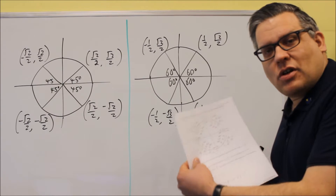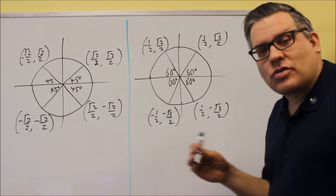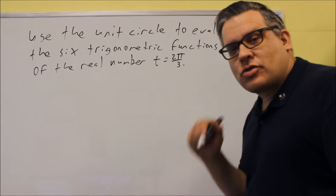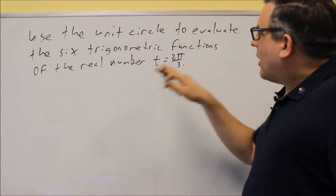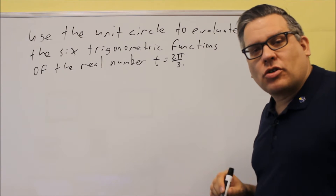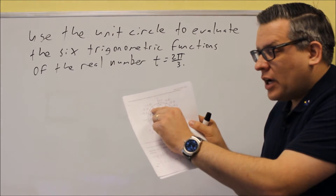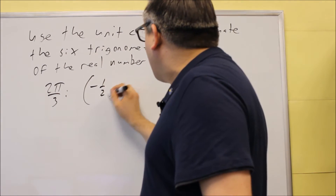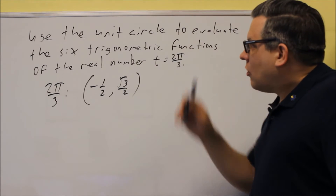Assuming you have a unit circle in front of you, we're going to answer the next question, which asks you to look at the value on the unit circle and get exact values for all six trig functions. The problem says: use the unit circle to evaluate the six trig functions of the real number t equals 2π over 3. So look at the angle 2π over 3 — it's in the upper left, the second quadrant. The coordinate there is negative 1 half and square root of 3 over 2, and that's the particular point we're at.